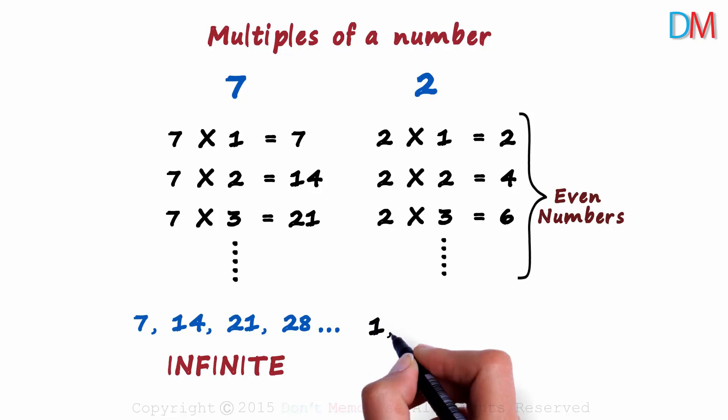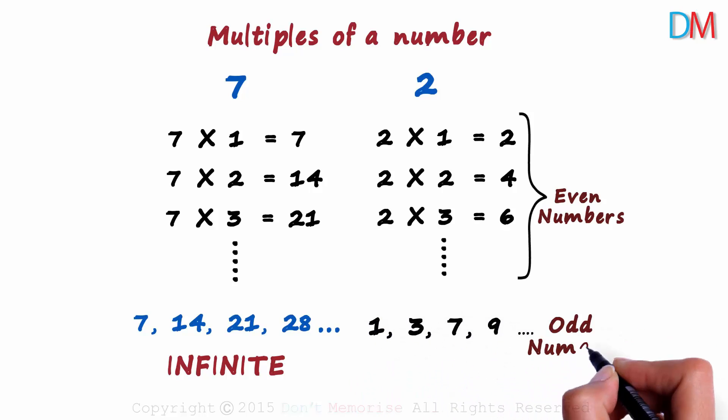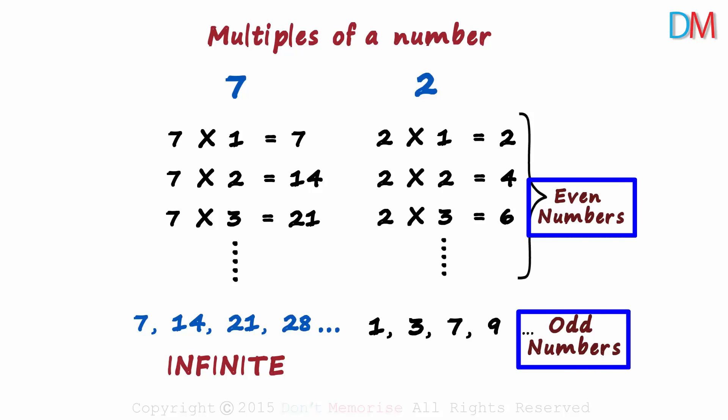So the numbers 1, 3, 7, 9 and so on are odd numbers. This concept of even and odd numbers is very important no matter which grade you are in.